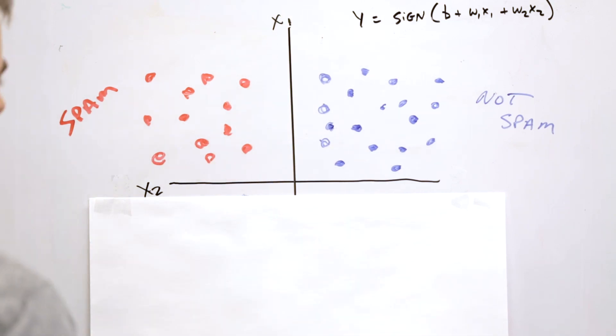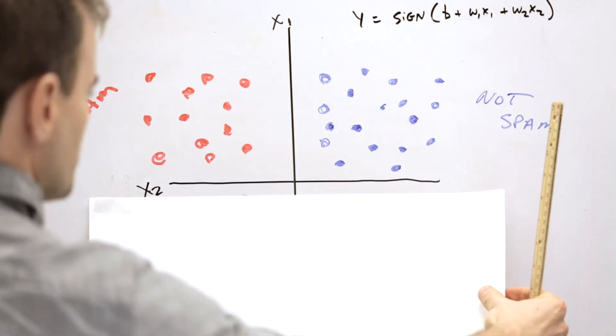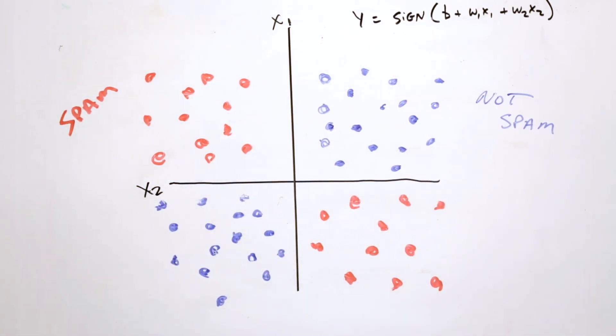However, what if our model needed to model something more complicated? In particular, what if our data, in fact, looks more like this?